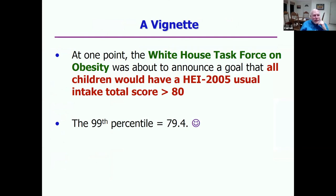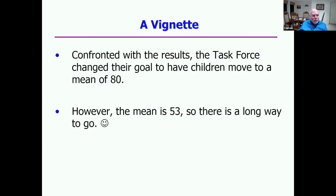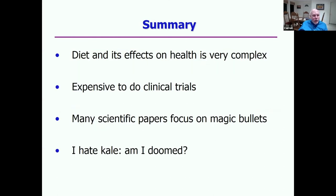There was a White House task force on obesity that was about to announce the goal that all children would have a healthy eating index total score greater than 80. At the time, the 99th percentile was 79.4%. I don't think you can change 99% of the people to completely change their diet — it was a ridiculous goal. So I showed this to somebody on the task force and they changed their goal, to having children move to a mean of 80. But the mean was 53, and changing from 53 to 80 is a huge, practically impossible challenge. I'm still amazed by this.